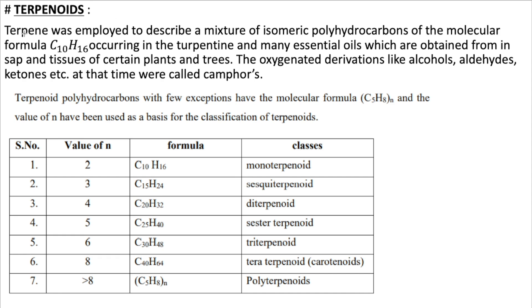Let's talk about terpenoids. The term 'terpene' was employed to describe a mixture of isomeric polyhydrocarbons of the molecular formula C₁₀H₁₆, occurring in turpentine and many essential oils obtained from the sap and tissues of certain plants and trees. Oxygenated derivatives like alcohols, aldehydes, and ketones were called camphors. Terpenoids are polyhydrocarbons with few exceptions, having the general molecular formula (C₅H₁₀)ₙ.